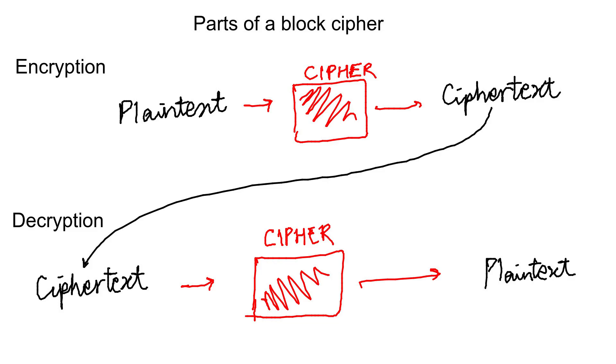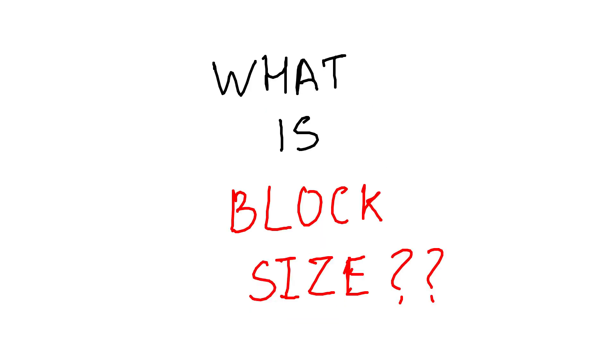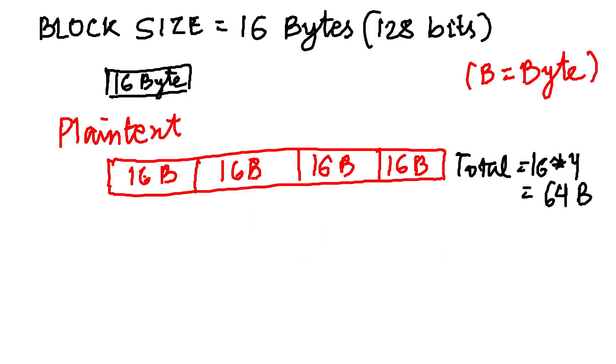Since they operate on blocks, it becomes important that the size of the plaintext is a multiple of the block size. So what is this block size? For example, if the block size is 16 bytes or 128 bits, then the size of the plaintext must be a multiple of 16. It could be 16, 32, 64 bytes, etc.